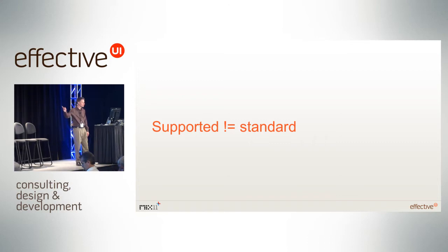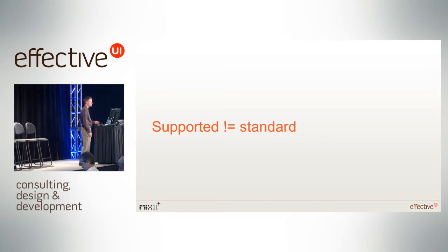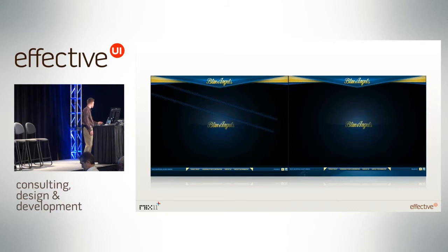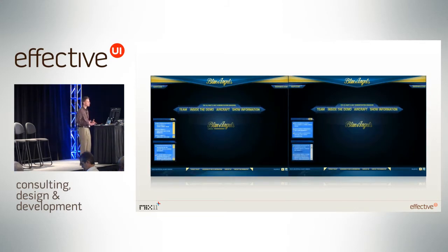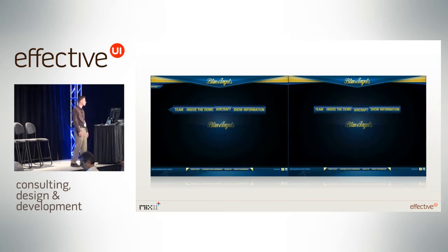So what did we learn? Number one: supported does not mean standard. You can see elements that are supported across all browsers, but they won't necessarily behave the same way across all of them. To animate the elements in, we used CSS3 transforms and JavaScript timers. The navigation rotates and slides in one browser, while in another it doesn't rotate at all and zooms up towards the camera. What we learned is you need to prototype your code, build it out and test across all browsers. It's okay if it's not exactly the same, but make sure it looks good. Also, build it on its own before plugging it all together.